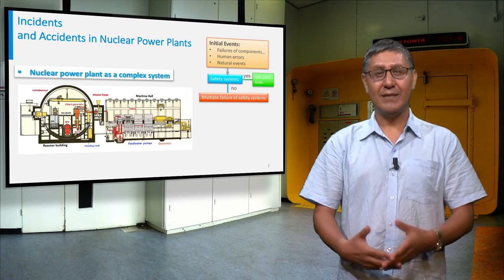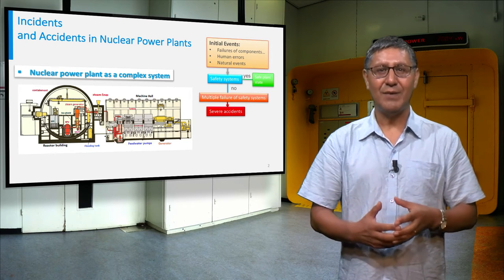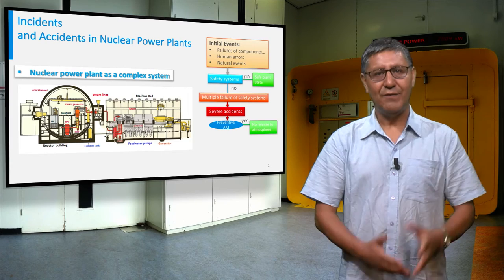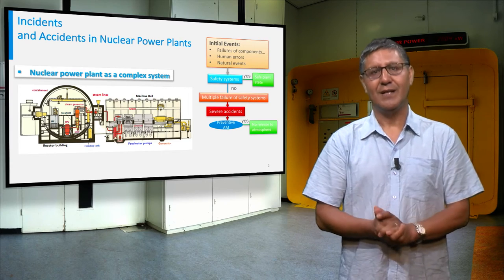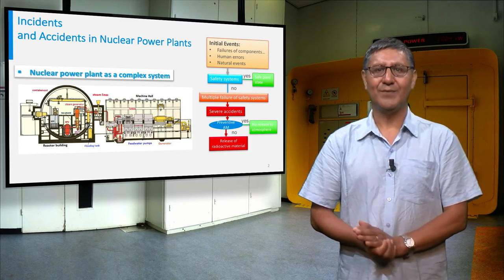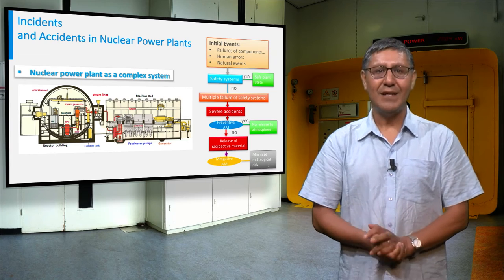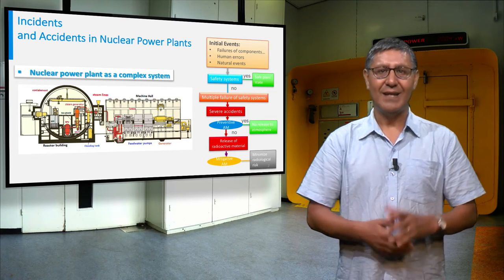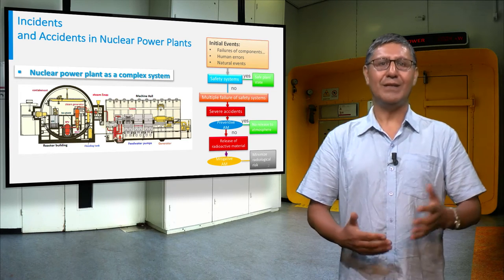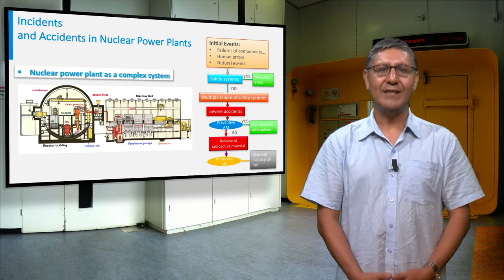In this case, preventive accident management will be taken. If it fails, the severe accident will progress. Finally, mitigative accident management is necessary to limit the consequences of the accident.